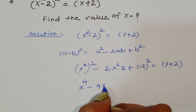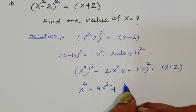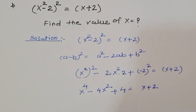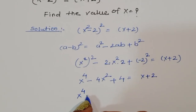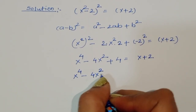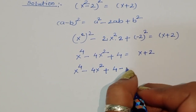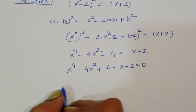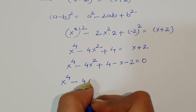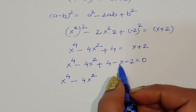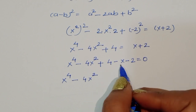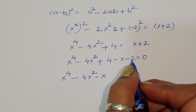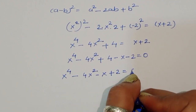So we get x⁴ - 4x² + 4 = x + 2. Rearranging, this gives us x⁴ - 4x² - x + 4 - 2 = 0, which simplifies to x⁴ - 4x² - x + 2 = 0.